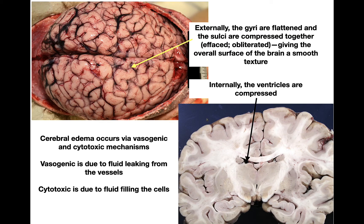What you would look for externally is that the gyri will be flattened and the sulci will be compressed together — sometimes described as effaced — giving the brain an overall flat texture. On cross-section, the ventricles would be compressed.